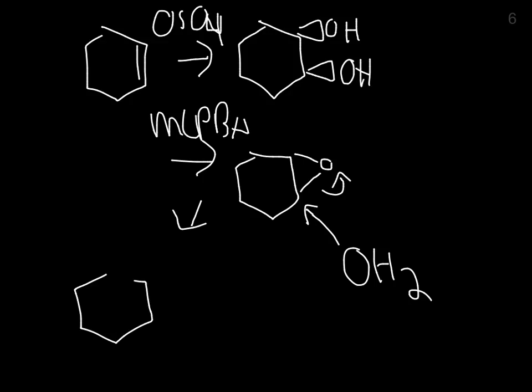You have one going up, one going down. So if you ever see trans diols, you know it's probably an epoxide opened with water, and if they're cis, it's probably cis-dihydroxylation with osmium tetroxide. So those are all the mechanistic ones. We will go into some alkyne chemistry, which is, some of it is pretty similar next time. See you guys.